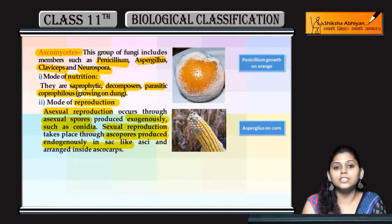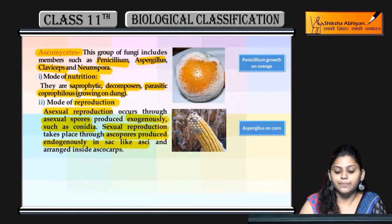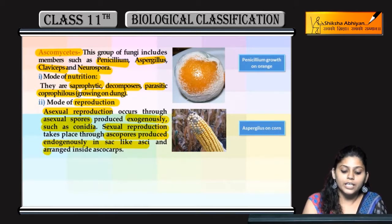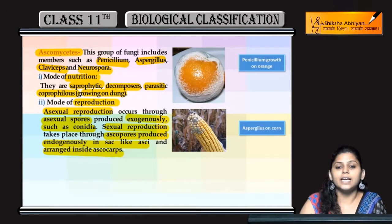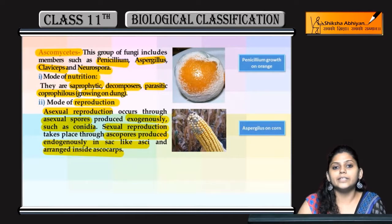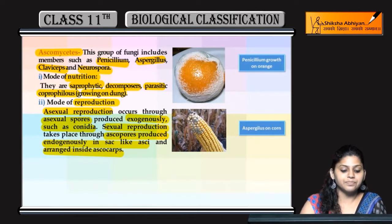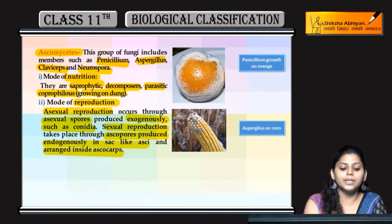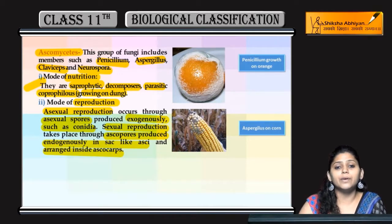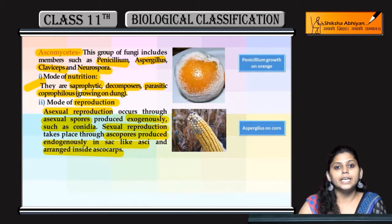Sexual reproduction hoti hai through ascospores jo produce hote hain endogenously in sack-like asci, aur arrange hote hain inside ascocarps. Ascocarps fruiting bodies hoti hain. Ascomycetes mein kya dekha: ye saprophytic, parasitic, aur decomposers bhi hote hain; reproduction asexually bhi aur sexually bhi hoti hai.